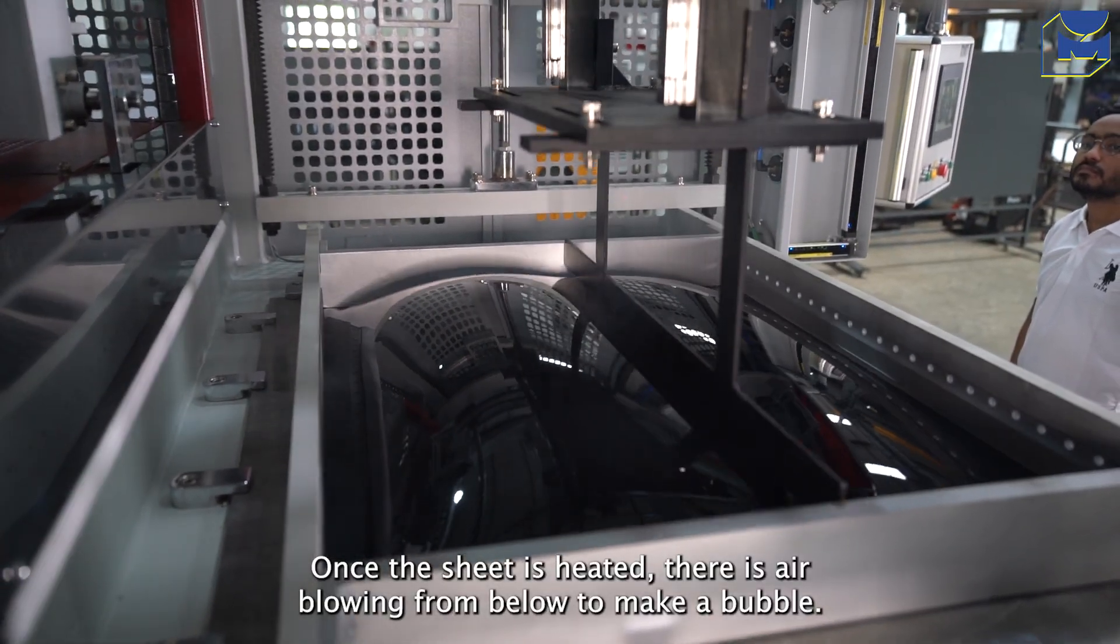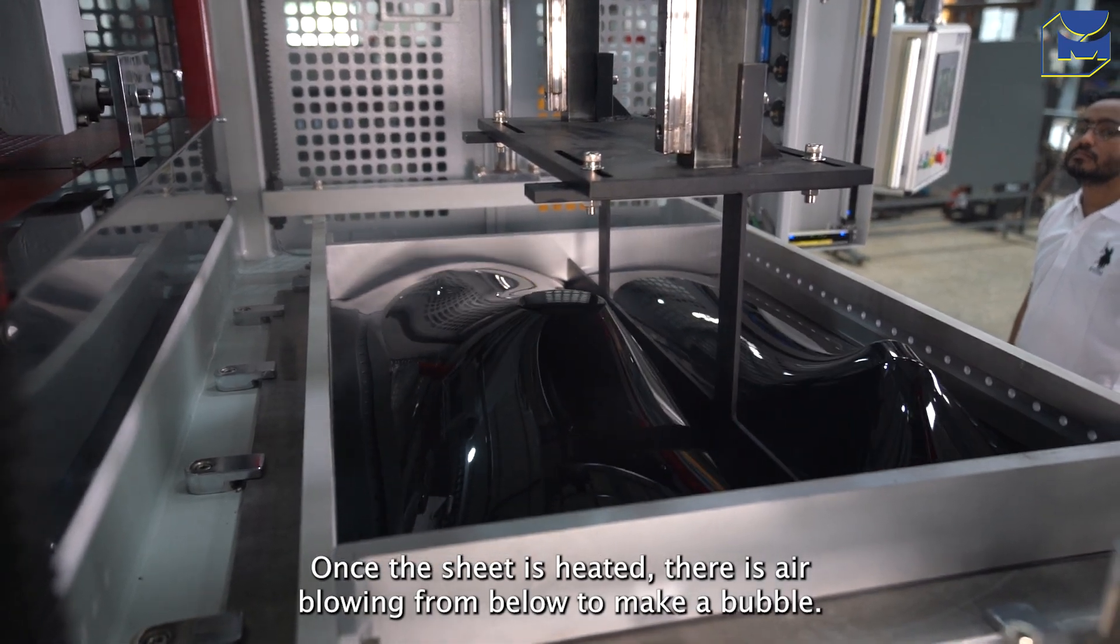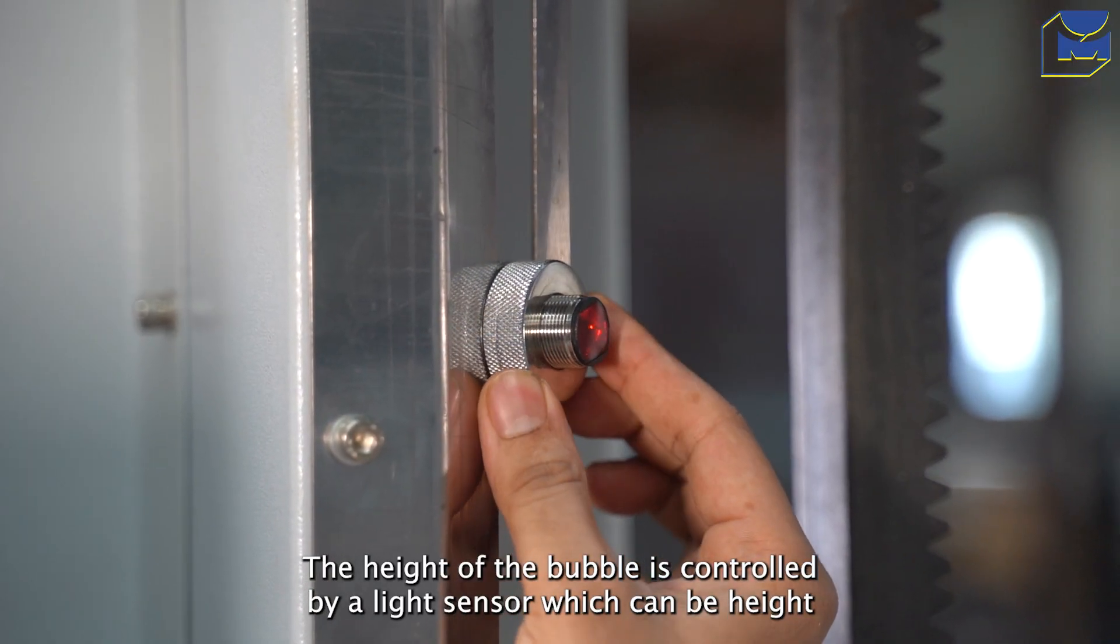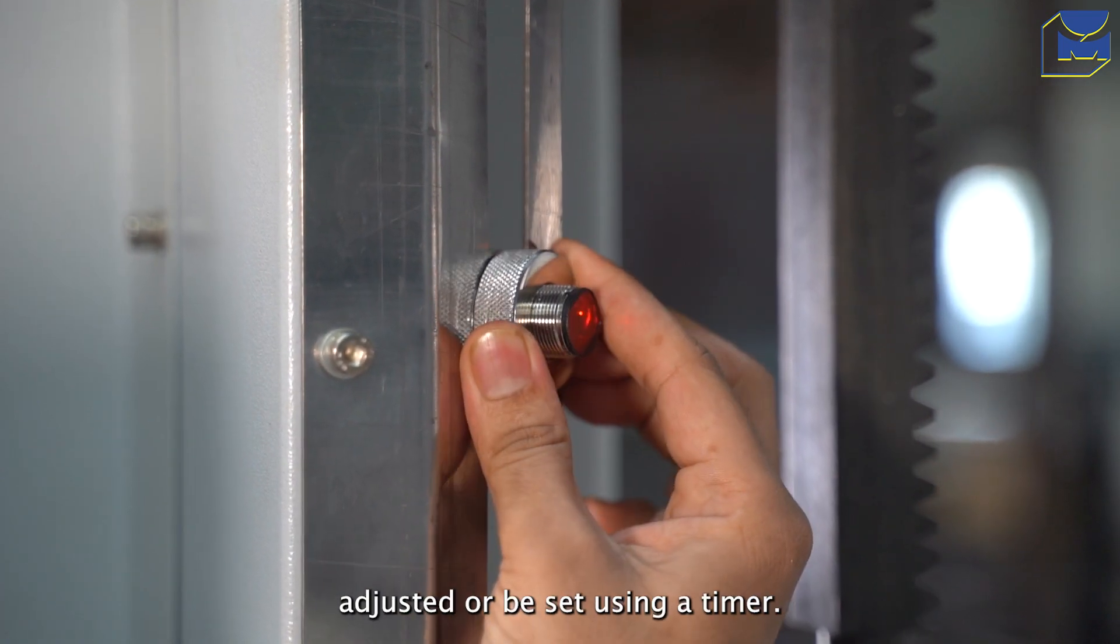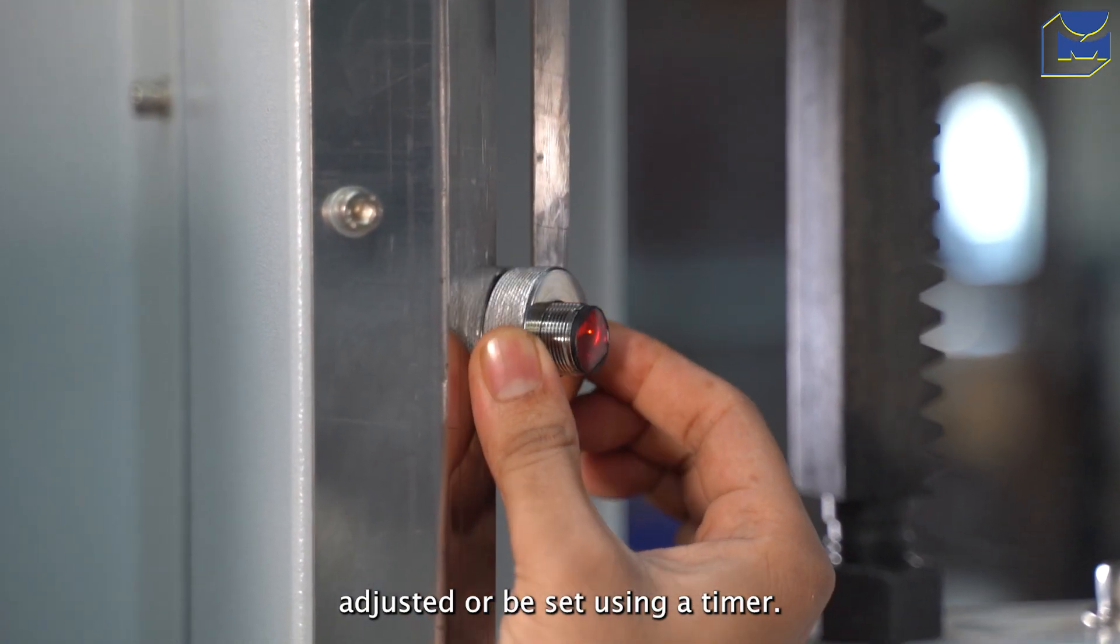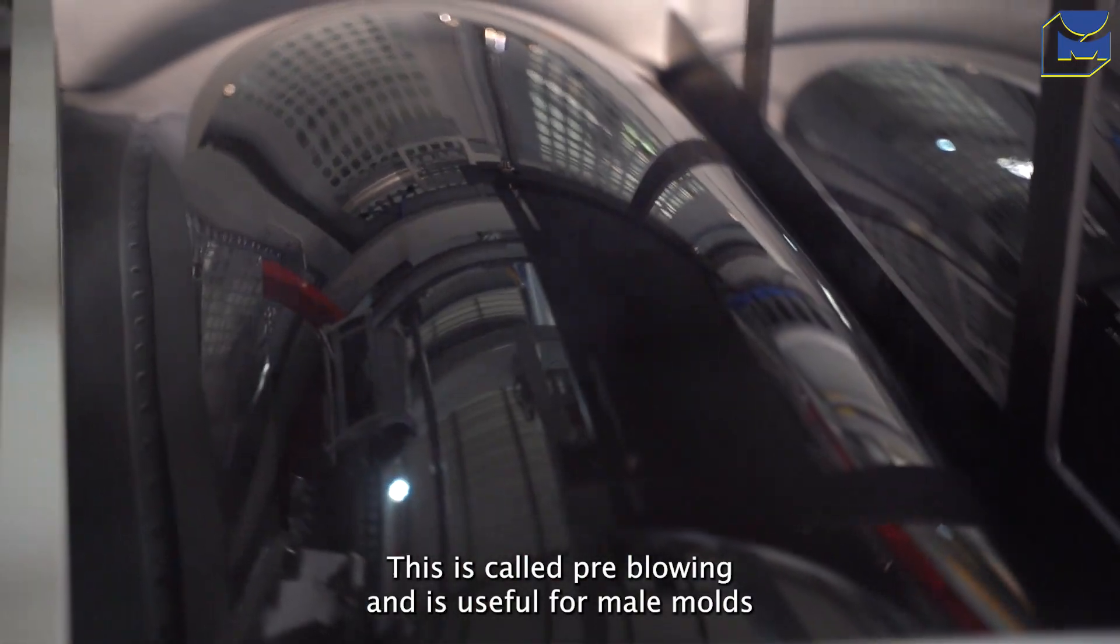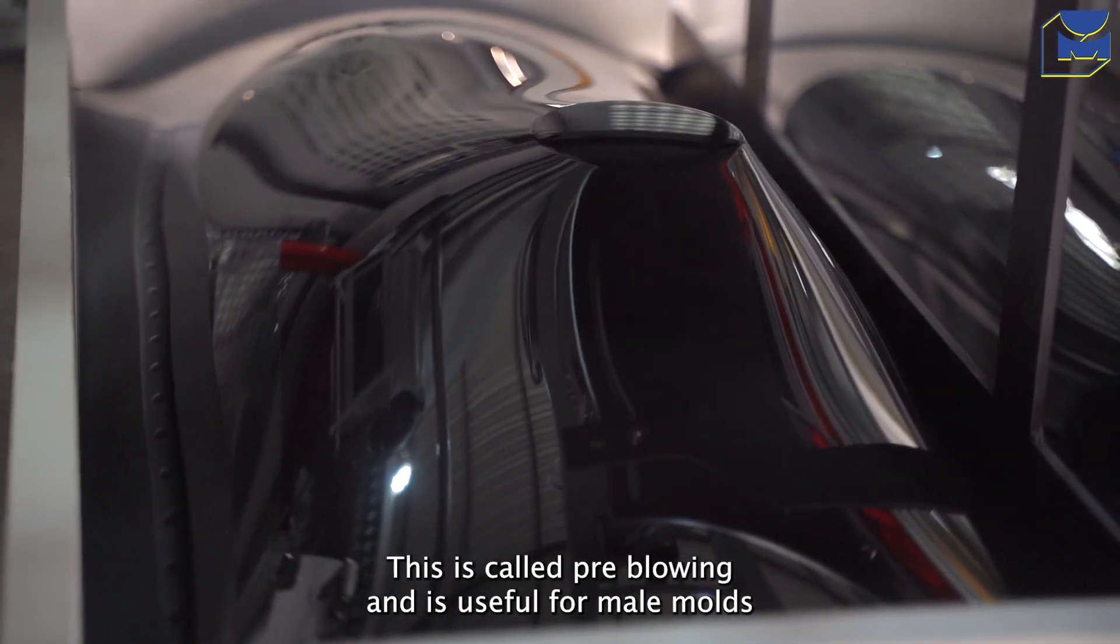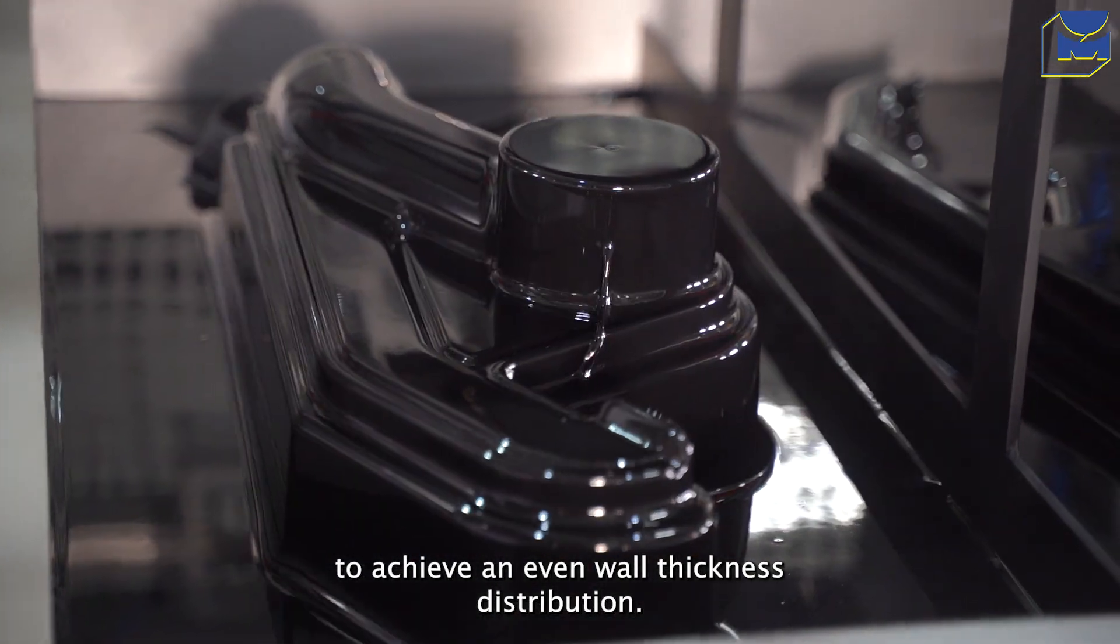Once the sheet is heated, there is air blown from below to make a bubble. The height of the bubble is controlled by a light sensor which can be height adjusted or set using a timer. This is called pre-blowing and is useful for male molds to achieve an even wall thickness distribution.